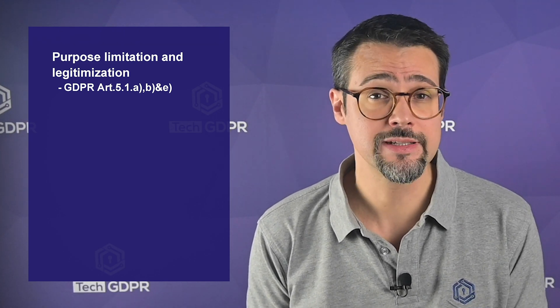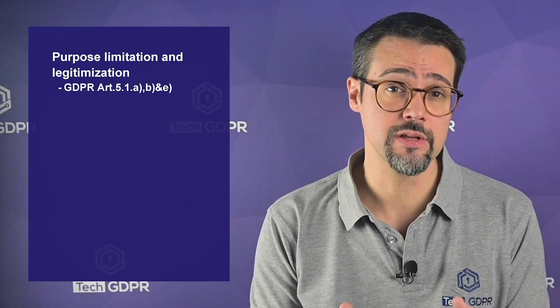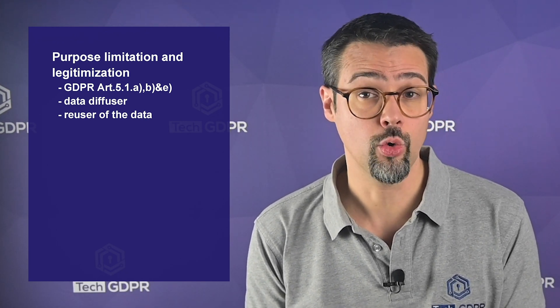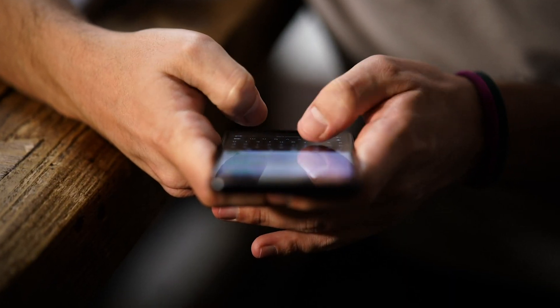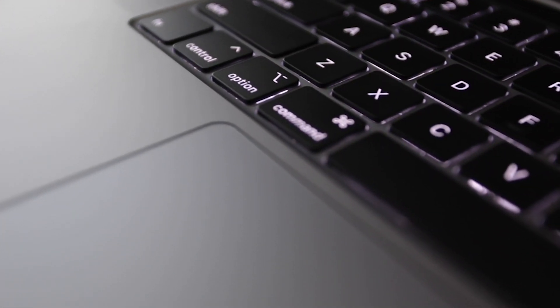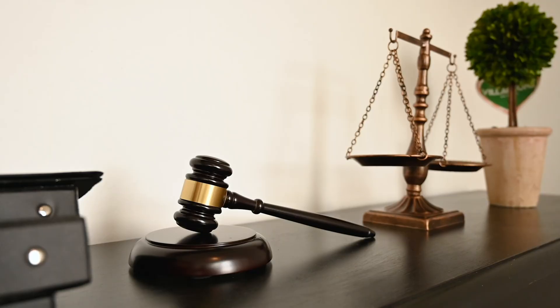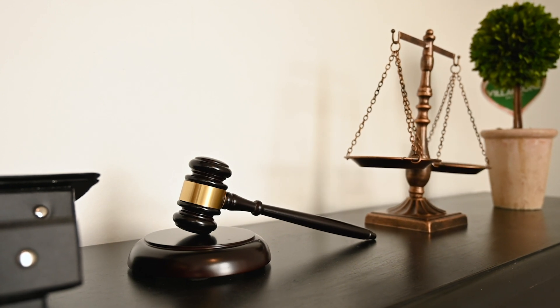If a data set is reused, there are two entities involved: the data diffuser, which is a natural or legal person that uploads personal data or a data set online, and the reuser of the data, which is a natural or legal person who processes such data with the intention of using it for their own purposes. Reusing data sets requires new legitimization for the use of the data, which is also true when using your own data as a data controller. The GDPR does not allow for the repurposing of data. A new purpose means a new legal base is needed and communicated, along with other communication requirements to the data subjects.